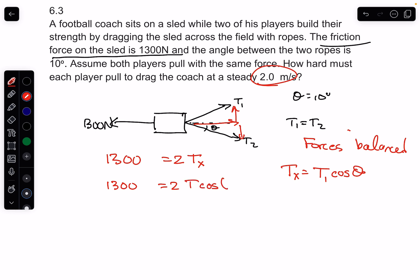So I can then say 1300 equals 2 times T cosine, and in this case it was 10 degrees. At this point you can probably solve for T.